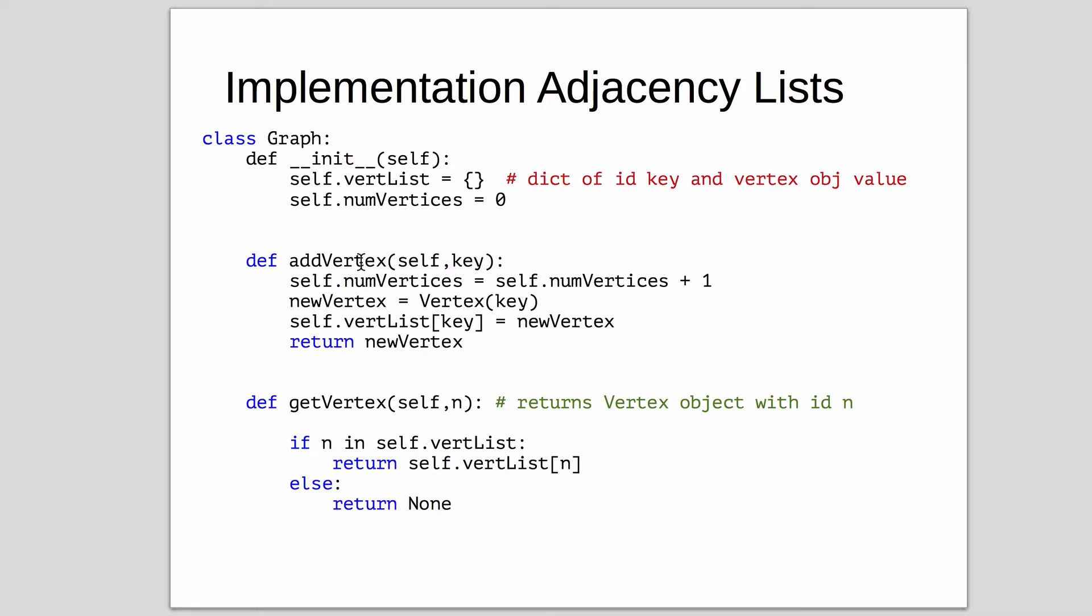AddVertex, you add a key, and it adds a new vertex. It increments the number of vertices. It creates a new vertex object by that key, and then it adds that vertex to the vertex list under the key. Then returns the new vertex.